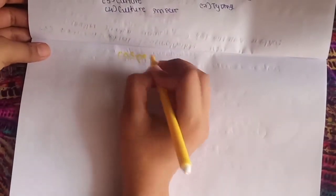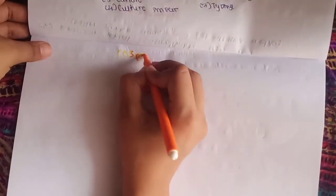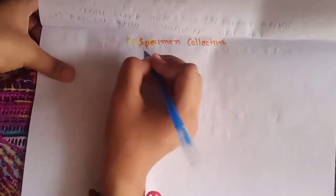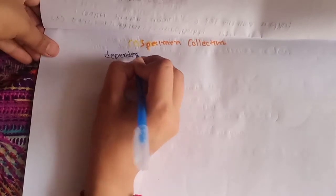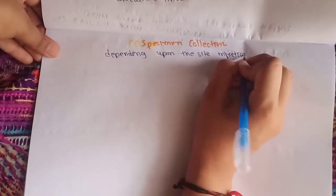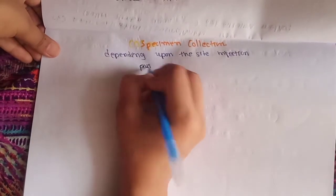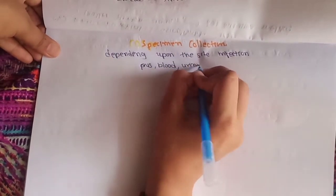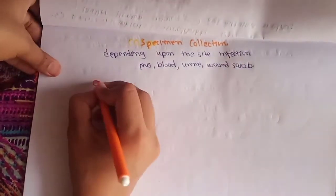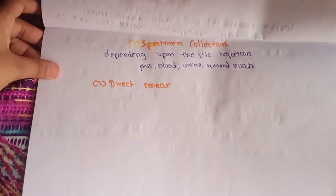Let's start with specimen collection. As we know, Pseudomonas can cause various types of infections. So, depending upon the site of infection, we will take the specimen. Examples include blood, urine, wound swab, CSF, etc.